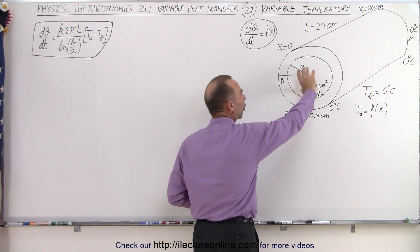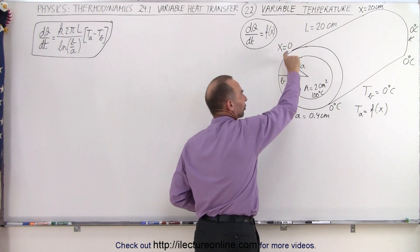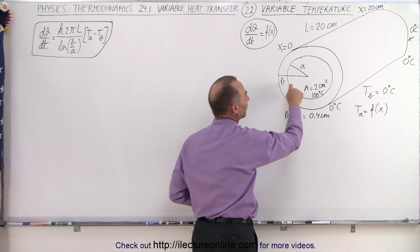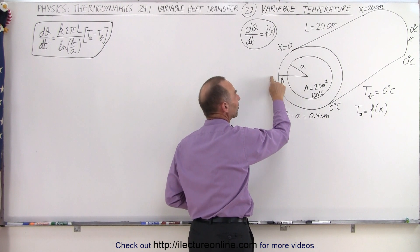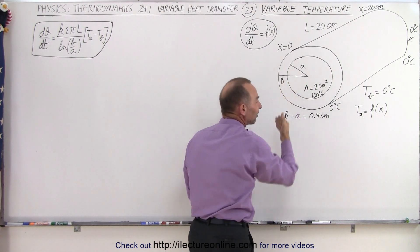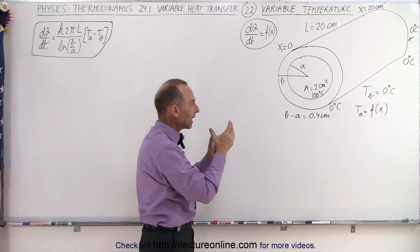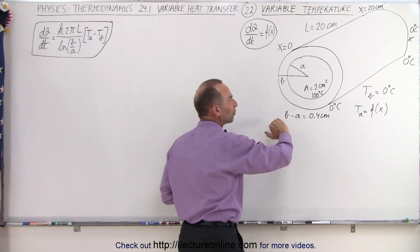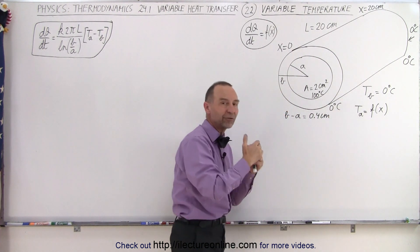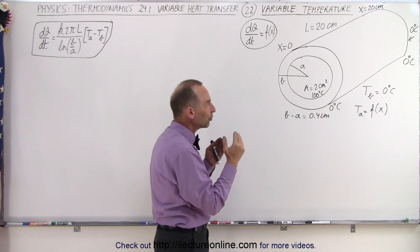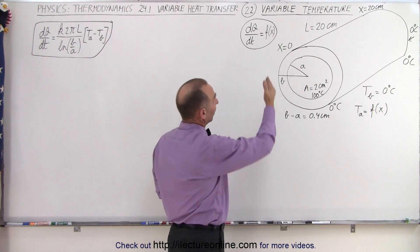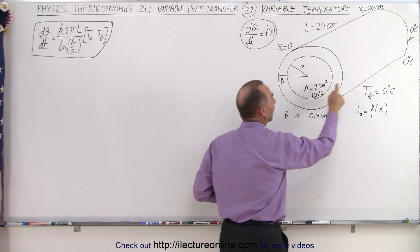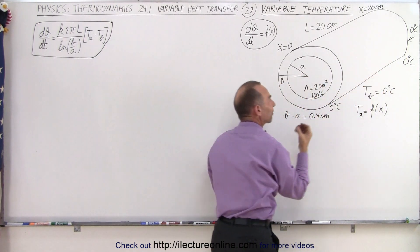We have a metal core and an insulated material around the core, and the length of that pipe here is 20 centimeters. We have an inside radius and outside radius for the insulated material, A and B. We have a temperature on the inside and outside. The temperature on the outside remains at 0 degrees centigrade for the entire length, but the temperature on the inside is a variable temperature. It's 100 degrees centigrade at the front and 0 degrees centigrade at the back for the inside.